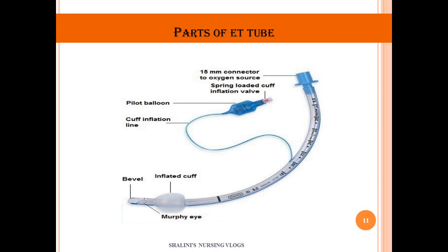The parts of the endotracheal tube include: the 15 mm connector, which connects to the oxygen source or ventilator; the pilot balloon, which is the cuff inflation line used to inflate the cuff; the inflated cuff itself; the bevel; Murphy's eye; and a radio-opaque line, which is another way of confirming the placement of the tube.